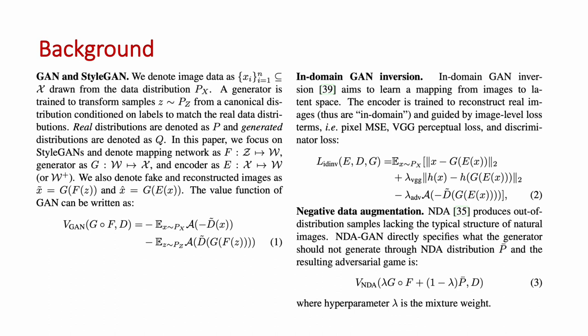Here are some backgrounds. Equation 1 shows the vanilla GAN value function. We also draw inspiration from in-domain GAN inversion and negative data augmentation. In-domain GAN inversion is trained to minimize three losses: a pixel-wise reconstruction loss, a VGG perceptual loss, and an adversarial loss, where reconstructed real images are considered as fake images by the discriminator.